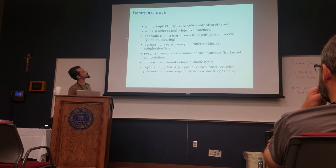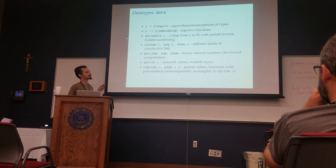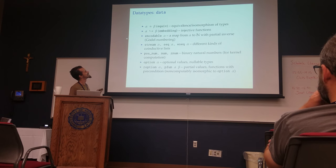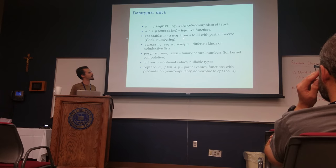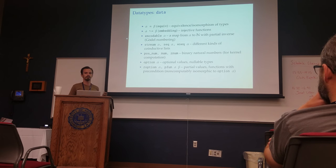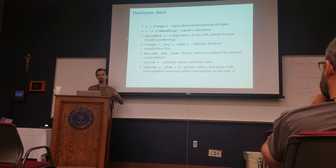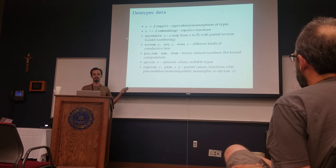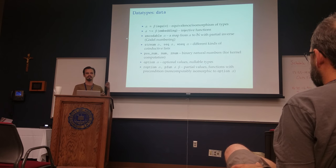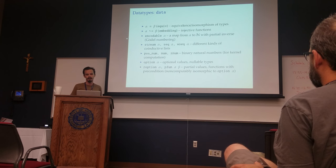A few more examples of data types: we have equivalences, which are the isomorphisms. Embeddings are just injective functions. Encodable is a type class which says that we have a map from our type to the natural numbers with a partial inverse — you can think of this as Gödel numbering. By using type classes to build larger and larger encodable things, you can just declare that some complicated type is encodable and it will figure out how to Gödel-code anything automatically.